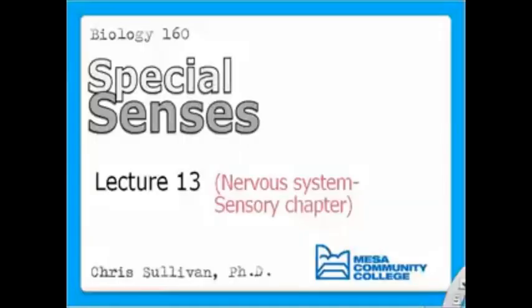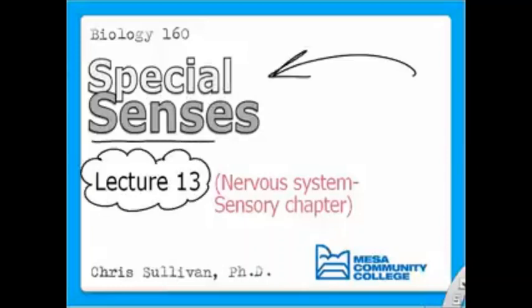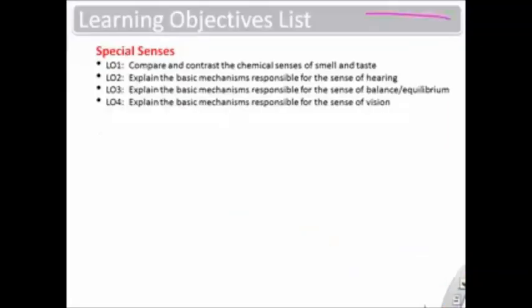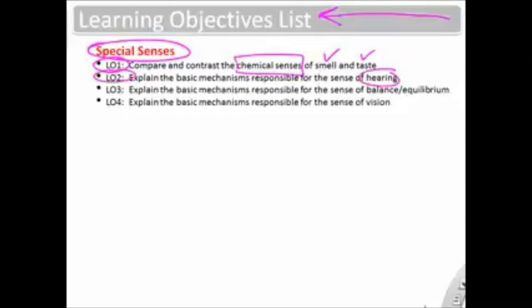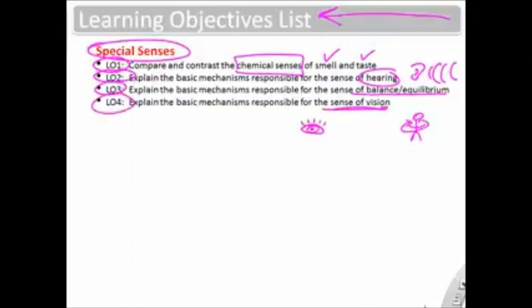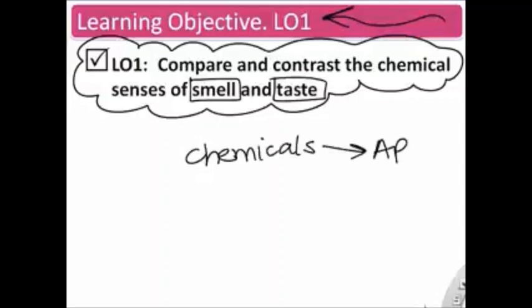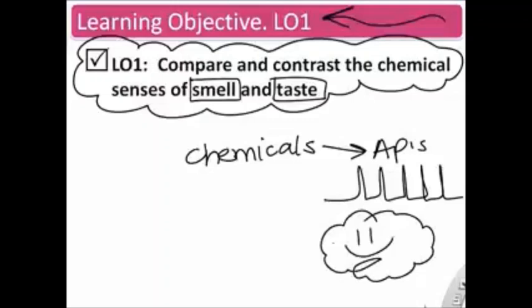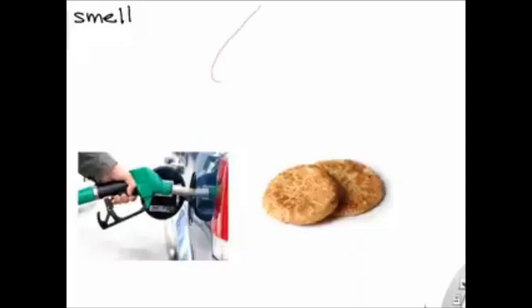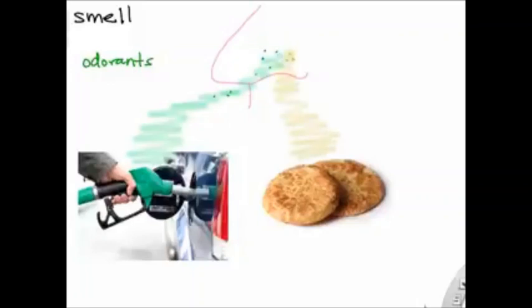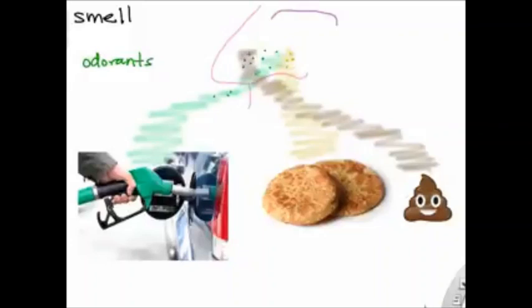Welcome — this video covers special senses. The learning objectives include: the chemical senses of smell and taste, hearing and balance, and the sense of vision. The first objective is to compare and contrast the chemical senses of smell and taste. Both are triggered by chemicals that cause action potentials in special neurons routed back to the brain.